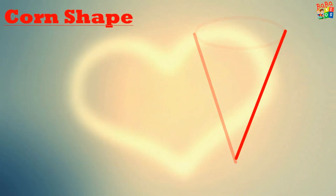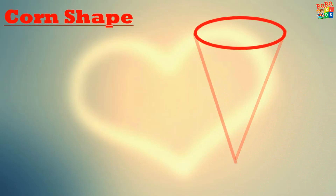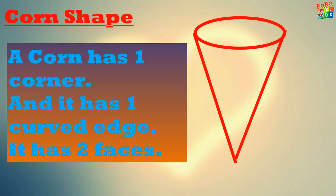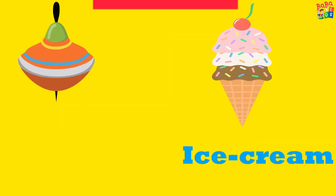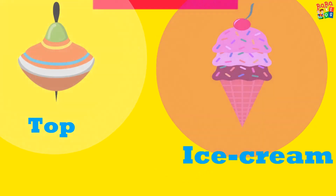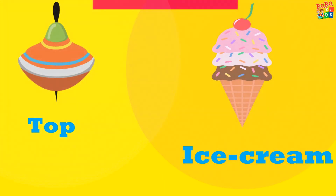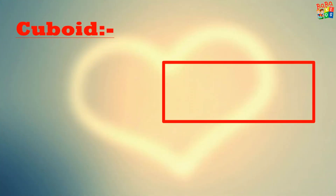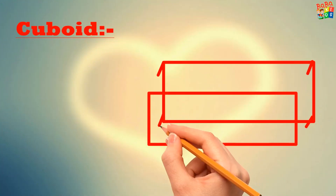Next shape is cone. This is a cone shape. A cone has one corner and one curved edge. It has two faces. A top and an ice cream are objects that have a cone shape.